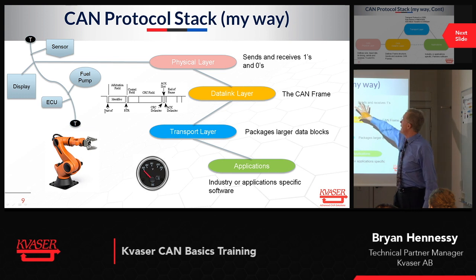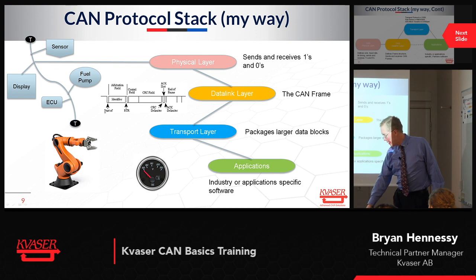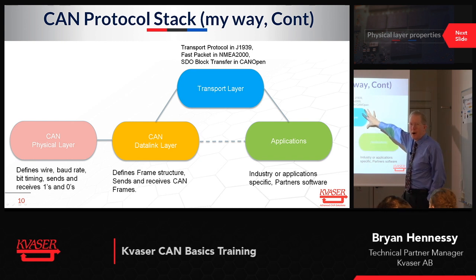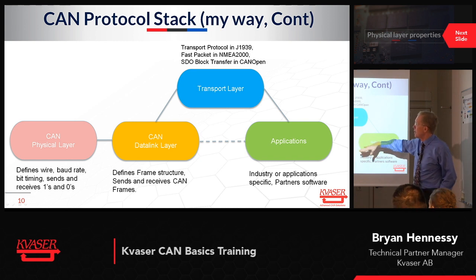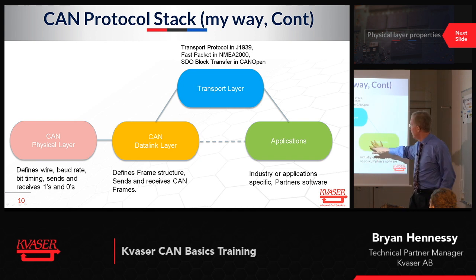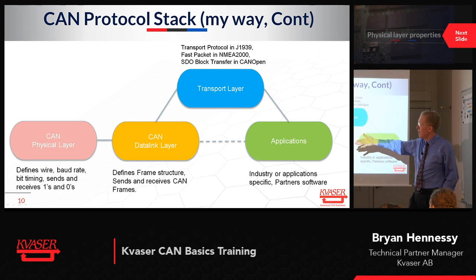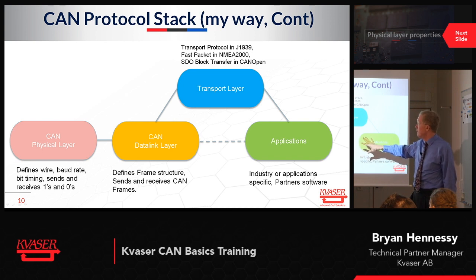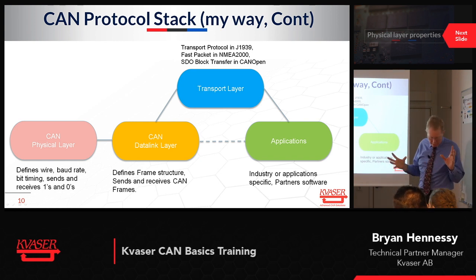I took this slide and wanted to add more complexity to it, but it was getting full, so I broke it out into a next slide using the same color layers and added a bit of text to prompt discussion. These are the same four layers. I show the transport layer as not always being used by placing it off to the side with a dotted line, because many messages are passed directly from data link to applications when they're only eight data bytes. The physical layer defines the wires, baud rate, and bit timing — its only job is sending ones and zeros. The data link layer defines the frame structure and sends and receives CAN frames so we can understand what the data is.